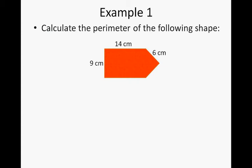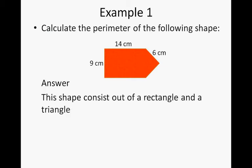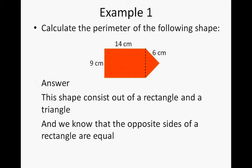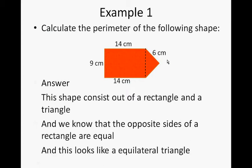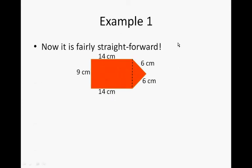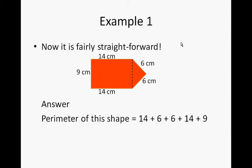Calculate the perimeter of the following shape. This shape consists of a rectangle and a triangle. See? And we know that the opposite sides of a rectangle are equal. So therefore, there we have another 14 cm. And this looks like an equilateral triangle, so there's another 6. Now it's fairly straightforward. The perimeter is 14 plus 6 plus 6 plus 14 plus 9 cm, and that gives us 49 cm.